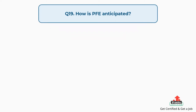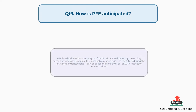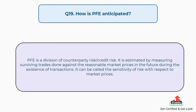Question number nineteen: how is PFE anticipated? PFE is a division of counterparty risk or credit risk. It is estimated by measuring surviving trades done against the reasonable market prices in the future during the existence of transactions. It can be called the sensitivity of risk with respect to market prices.